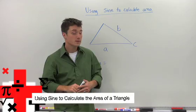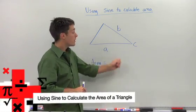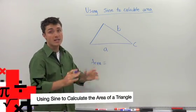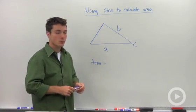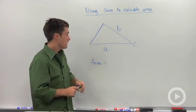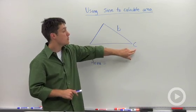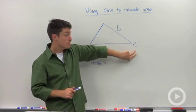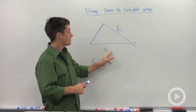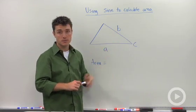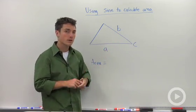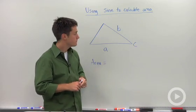We can use sine to calculate the area of any triangle — it doesn't have to be a right triangle. So if I knew an angle C and the two sides adjacent to it, how would I calculate the area?